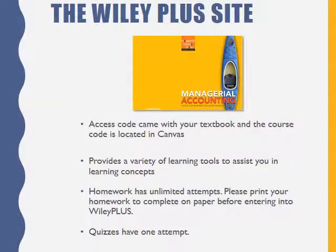Access to Wiley Plus is a two-step process. First, you'll need access information found at Canvas for your specific class at the Wiley Plus site. Then, you'll need the access code that you purchased with the textbook or separately.